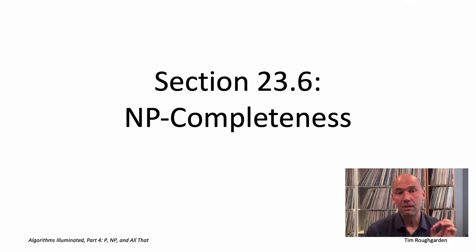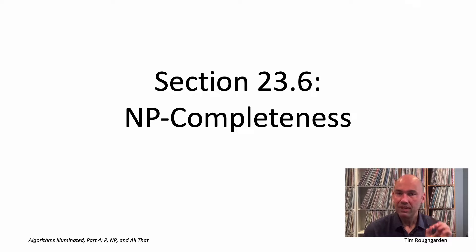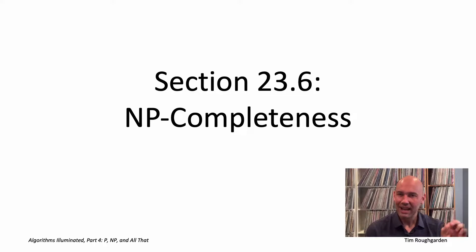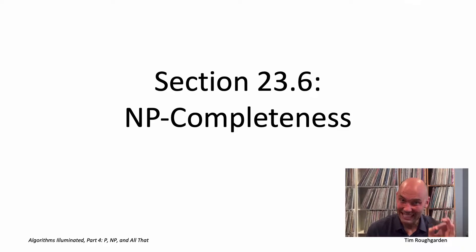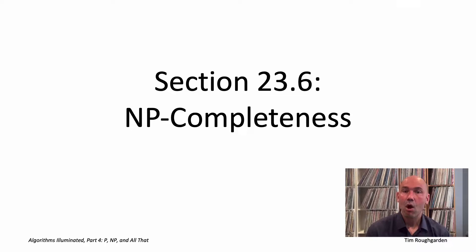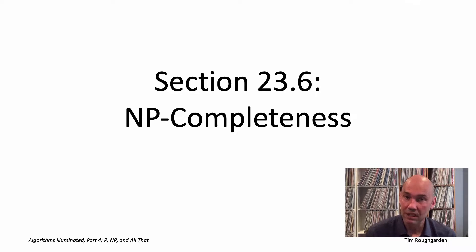We can say something more precise about 3SAT and most of the other NP-hard problems we've seen, which is that it turns out it's actually NP-complete. What that means is that it's not just that an efficient subroutine for 3SAT is sufficient to solve every problem in NP — it's that every problem in NP is literally just a thinly disguised special case of the 3SAT problem. NP-complete problems like 3SAT are universal in the sense that they simultaneously encode every single problem in the complexity class NP.